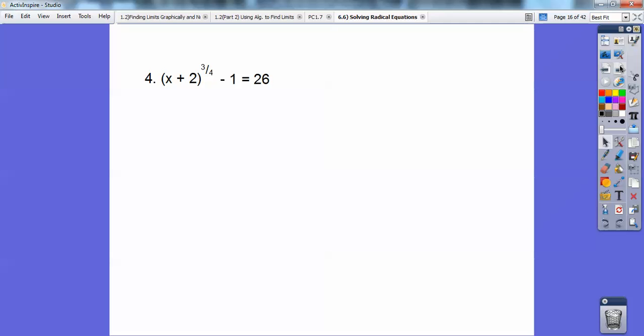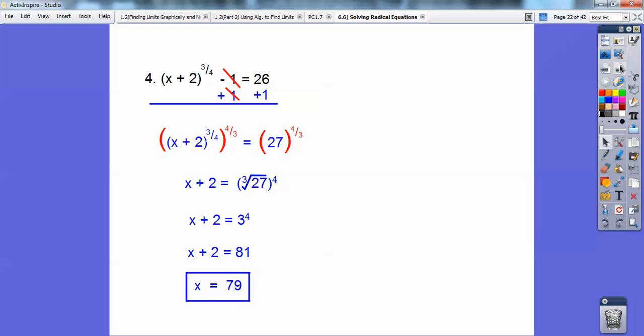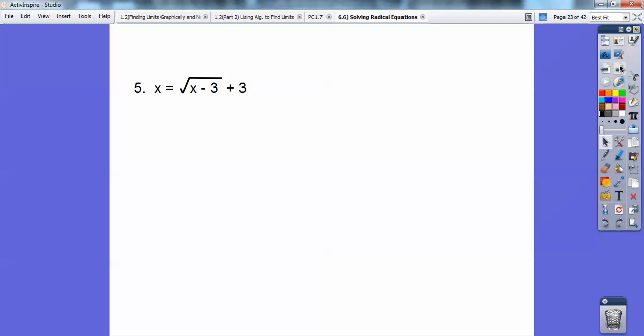Here, you guys probably already know, I'm going to get rid of that 1 first, and then I have that quantity to the 3 fourths power, so I'm going to raise both sides to the reciprocal, 4 thirds. And then again, that's going to be the cube root of 27, except this time it's to the fourth, x plus 2, so 3 to the fourth is 81, and then subtract 2 from both sides, and you get 79.